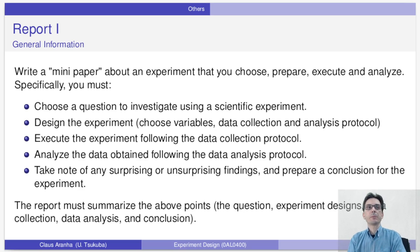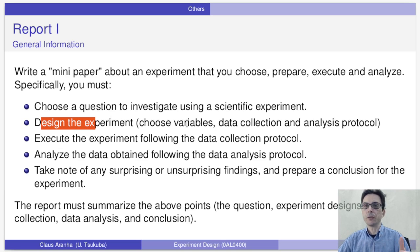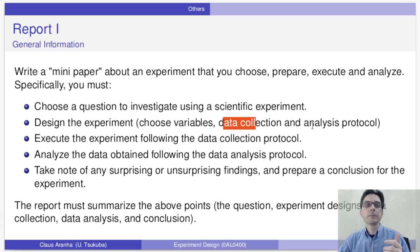The goal of report number one is for you to write a mini paper about an experiment that you choose, prepare, execute, and analyze. More specifically, you need to choose a question that you are interested in to investigate using a scientific experiment. Then you design the experiment to answer that question, which means you choose the variables that you're going to control, you define how you're going to collect the data, and you define how you're going to analyze the data.